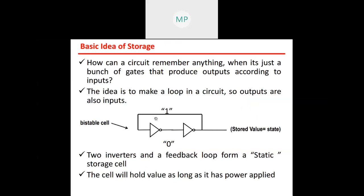If the input of the first NOT gate is one, then the output will be zero. This output is applied to the second NOT gate, so the output will again be one. This phenomenon continuously happens and it will store output one. To store a bit in a simple manner, we need a minimum of two NOT gates. Two inverters in a feedback loop form a static storage cell that will hold a value as long as power is applied.